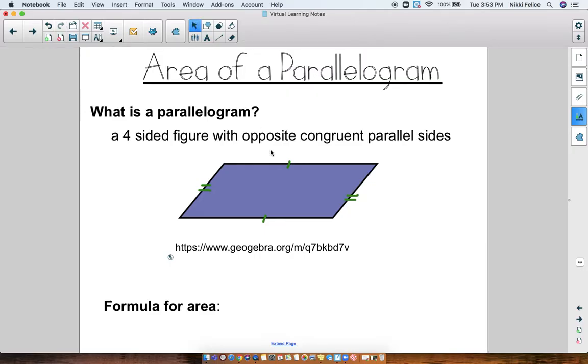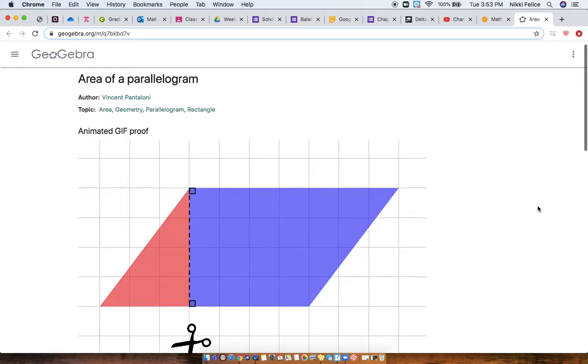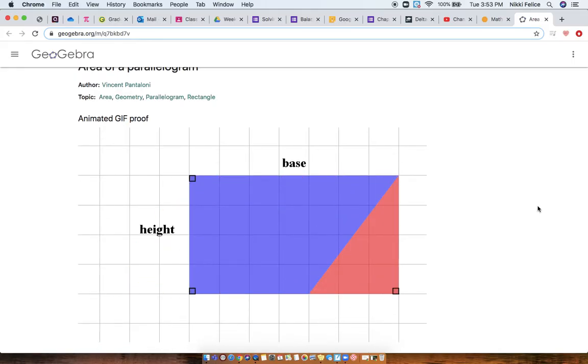And there's an animation here that I'm going to show you that really helps to see how a parallelogram works. So now as you can see in this, if you cut off that triangle part of it and you slide it over to the other side, it makes a perfect rectangle.